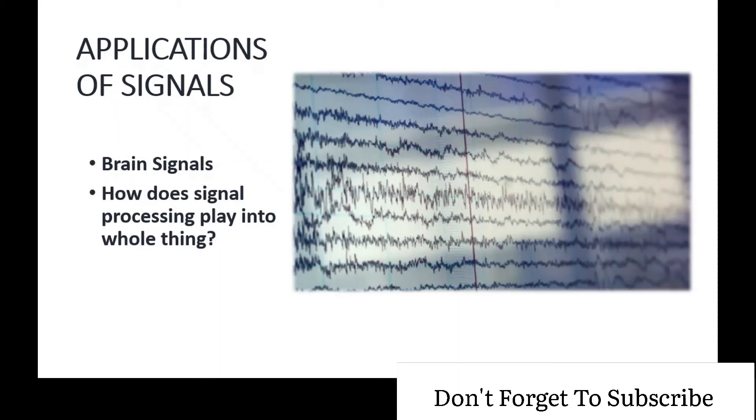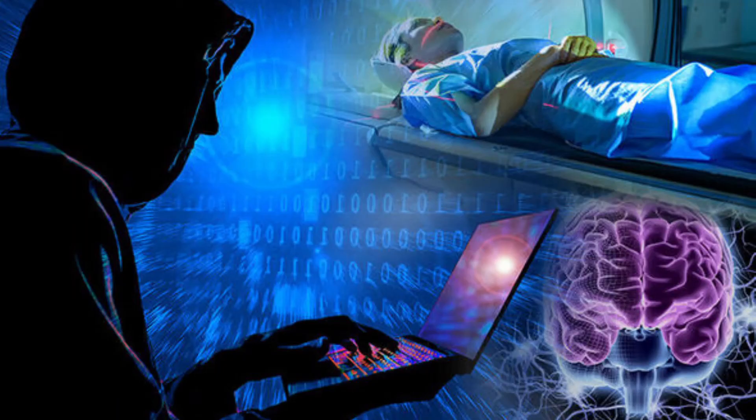We can use signal processing methods to analyze the signal to look for specific patterns that occur when you perform a movement. Another very important application is to remove noise from the brain signal. And the third one is to get information from the signal.